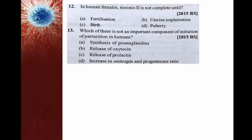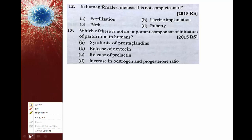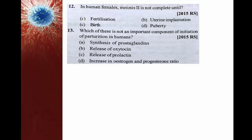In human females, meiosis 2 is not complete until fertilization. The second meiosis is completed at the time of fertilization — when the sperm enters the egg, the second meiosis completes. So the right option is option A.